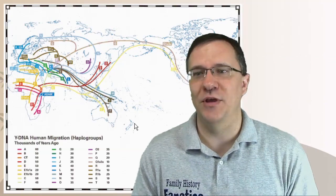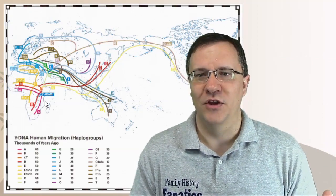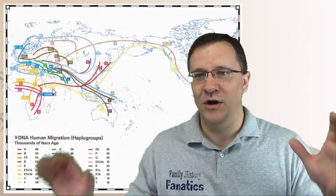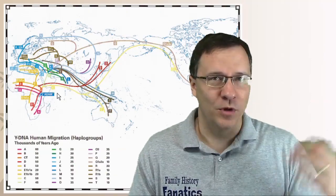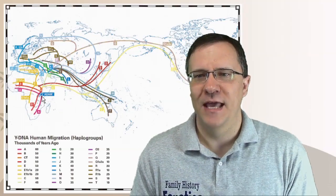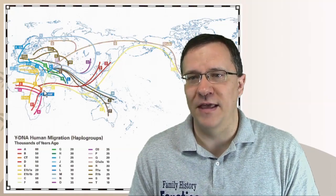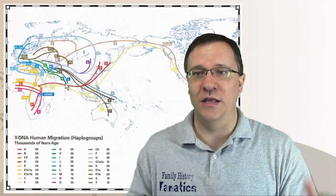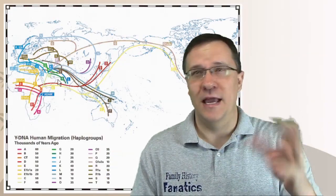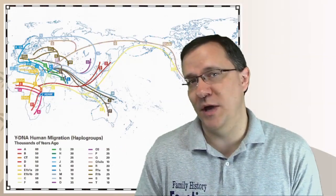In Family Tree DNA, you can actually see this map of the haplogroups. You can see over here, it starts with what's called Y-DNA Adam in Africa, and then it starts to branch off. You have the A and the B haplogroups in Africa, and then it goes into some C and D haplogroups, which cross over into the Asian continent. And from there, it starts to explode into lots of different ways.